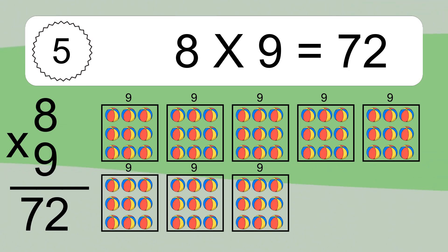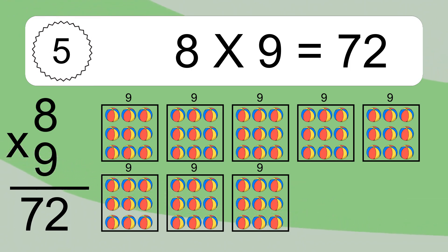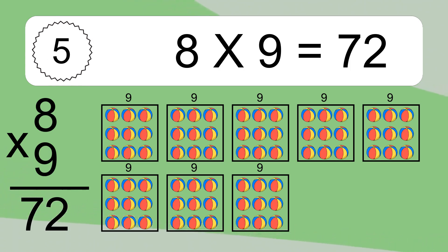We have 8 boxes, and each box has 9 colorful balls inside. If you count all the balls in all the boxes together, you will have 8 times 9 balls. This equals 72 balls.